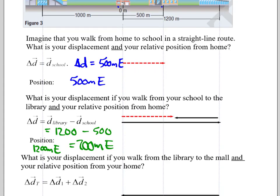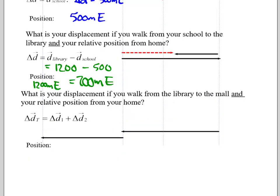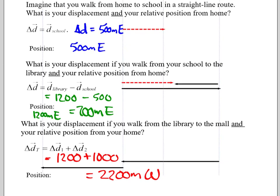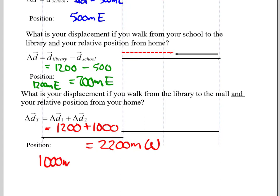And then lastly, what is your displacement if you walk from the library to the mall and your relative position from home? If we start at the library and we want to walk all the way to the mall, well, we should see we've got 1200 meters here and another 1000 meters here. So my displacement now would be 1200 plus 1000, which would equal 2200 meters and we need a direction to the west. But my position if I'm at the mall, we scroll back up and notice the mall here is only 1000 meters from your home. So your position would be 1000 meters to the west.